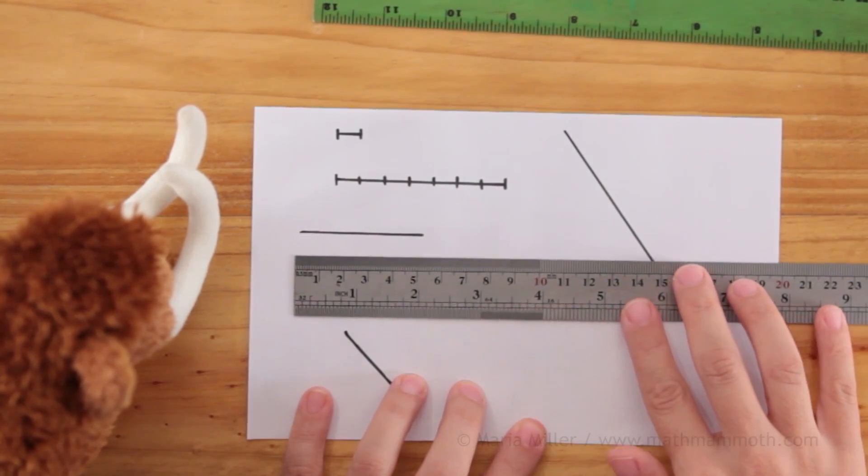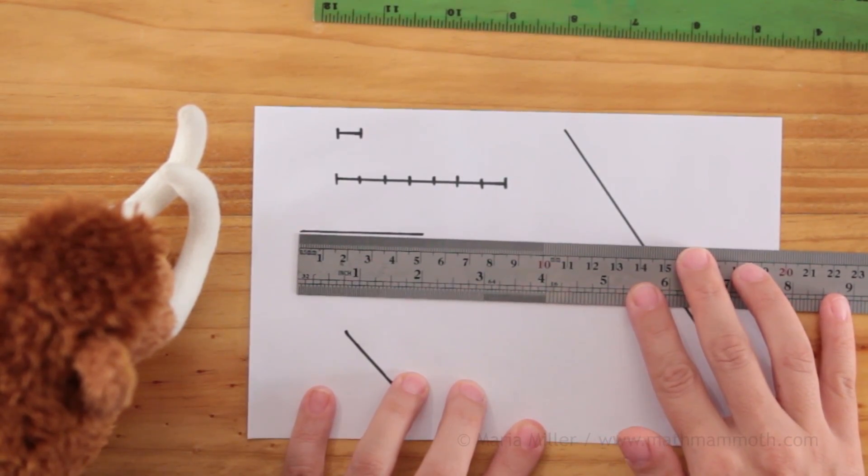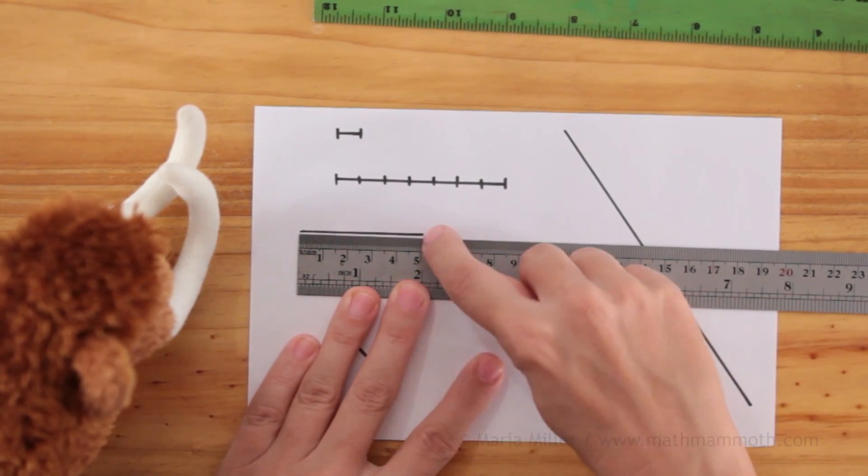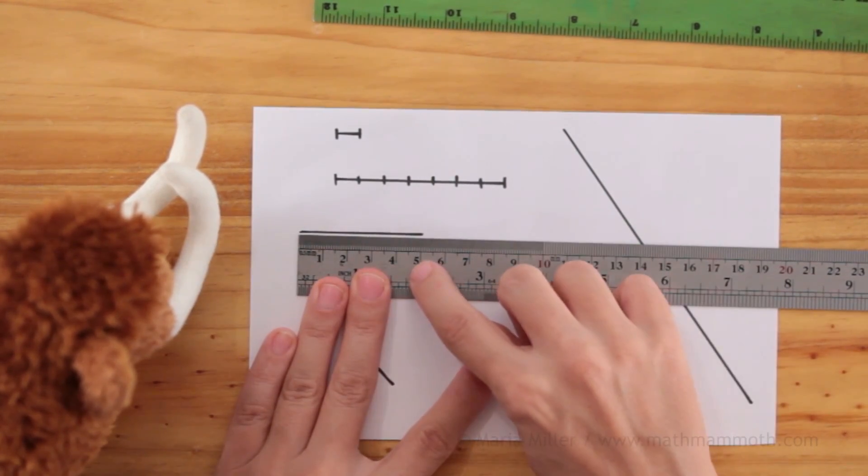In this one I just line up the end of the ruler with my line. And then I check here at the end of the line, it is at five centimeters.